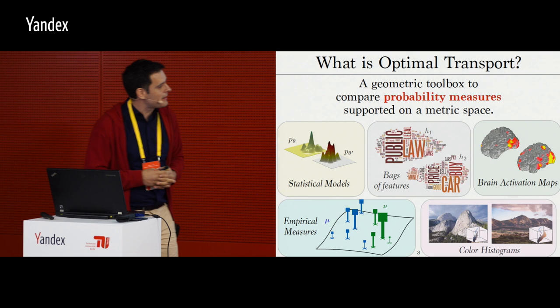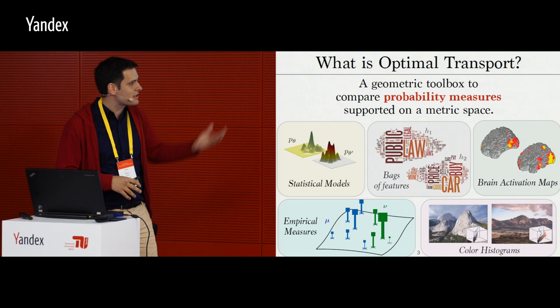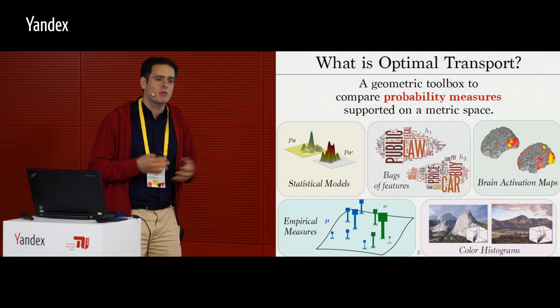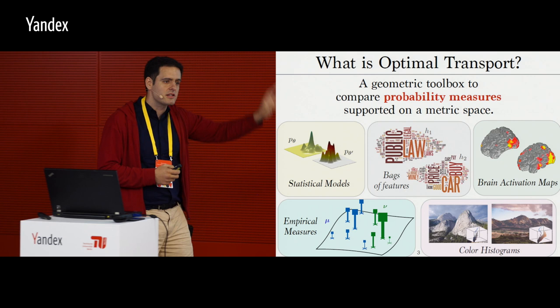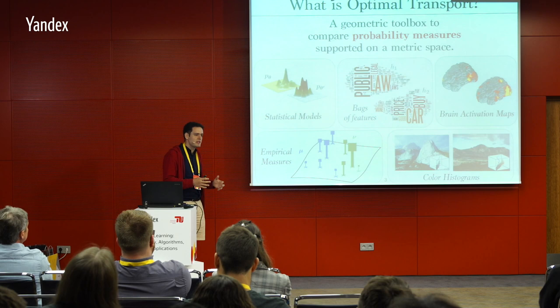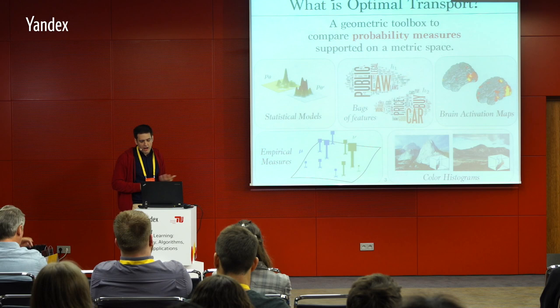What I mean by probability measures is something you all know — it's a very versatile representation for data, tools, statistics, bags of words, color histograms, images, et cetera. We're going to compare probability distributions. Probability distributions might be regarded as one item in your database — a text is a bag of words. But you can also look at them at the meta level, which is basically a probability distribution as a statistical model for a database. I will consider both of those aspects.